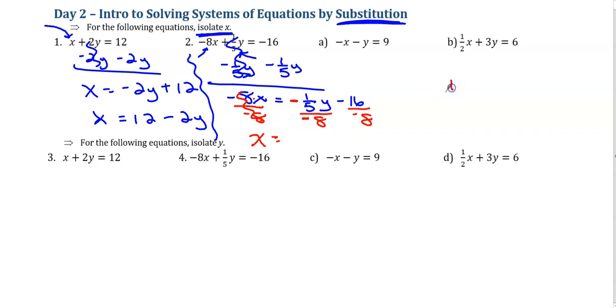x is still not by itself. This negative 8 has got to go. It's connected with multiplication, so I'm going to divide by negative 8. And now this isn't very friendly. So I got to do negative 1/5 divided by negative 8. 1/5 divided by 8 is the same as 1/5 times 1 over 8, which ends up being 1 over 40. So this ends up being 1/40 y. Negative 16 divided by negative 8 is positive 2. x is by itself, but that wasn't very friendly or fun. And that's what I'm trying to show you.